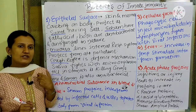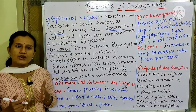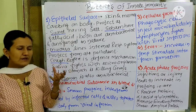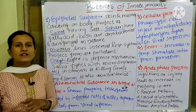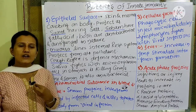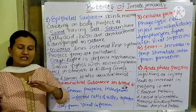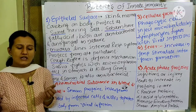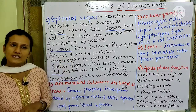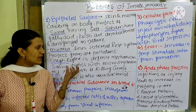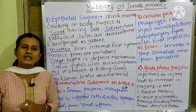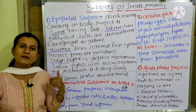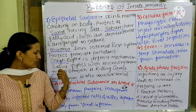If we inhale air pollutants from our environment, the cough reflex is one of the defense mechanisms of the epithelial surface. It is a very important defense mechanism. Then, saliva, which is secreted by the three pairs of salivary glands in our mouth cavity, is one of the secretions that helps in digestion. Saliva also fights with microorganisms — it is antimicrobial and antibacterial in nature.